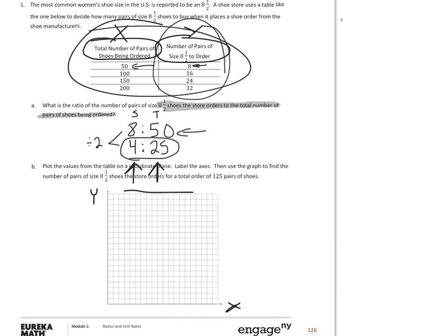Since it's already set up and in line, it already has my ordered pairs. 50 goes with 8, 100 with 16, 150 with 24, and then 200 went with 32.